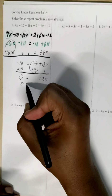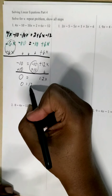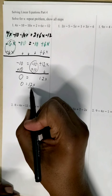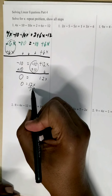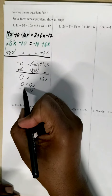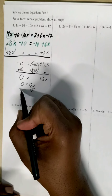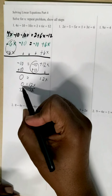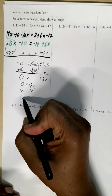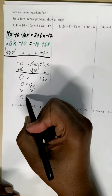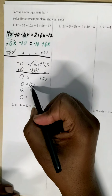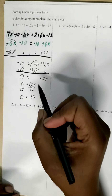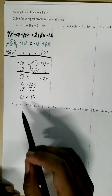So now we have zero equals 12x. This is a multiplying 12, so I'm going to use dividing 12 to get rid of it, and whatever we do on one side we do on the other. Zero divided by 12 is zero, equals comes down, and 12 divided by 12 is 1, so x equals zero.